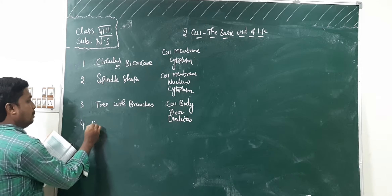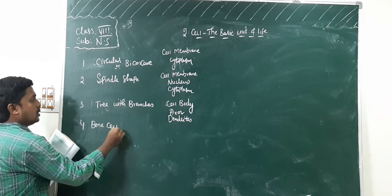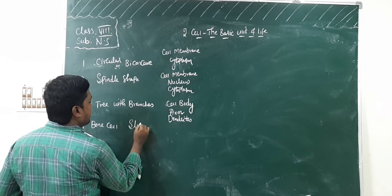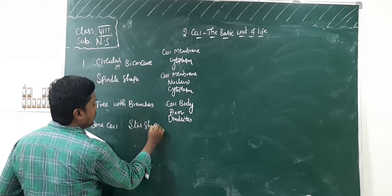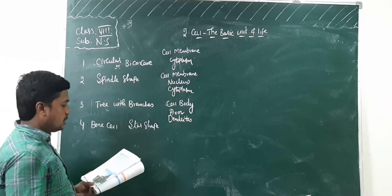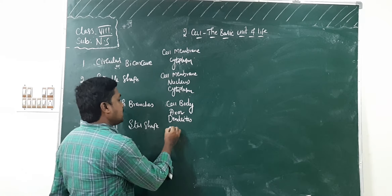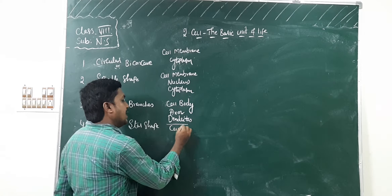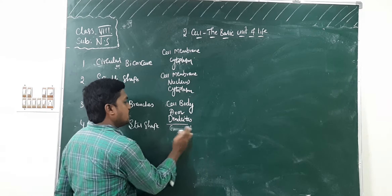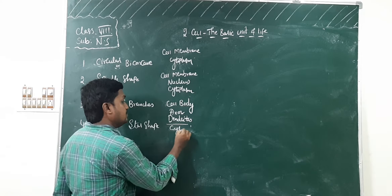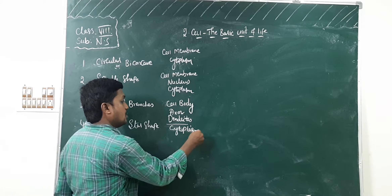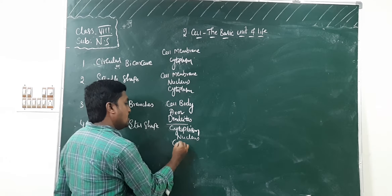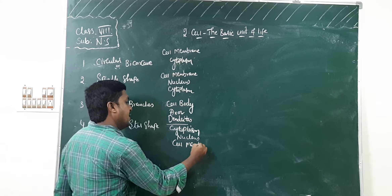Next one is bone cell. Its shape is star shape. Write that down. Parts: cell body, cytoplasm, nucleus, and cell membrane.